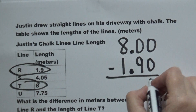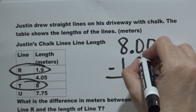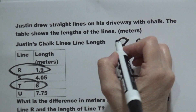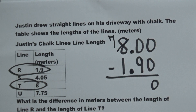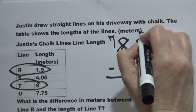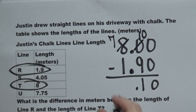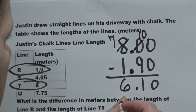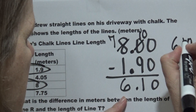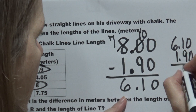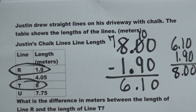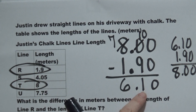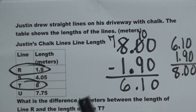0 pennies take away 0 pennies is 0. I can't take 9 dimes away from 0 dimes, so I have to go over to the 1s — I take from the 8 ones and make it 7. I bring 1 one over and break it down into 10 dimes. 10 dimes take away 9 dimes is 1 dime. 7 ones take away 1 one gives us 6. Always check yourself: 6 dollars and 10 cents plus $1.90 gives us $8. The difference is 6.10 meters.